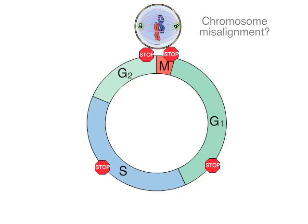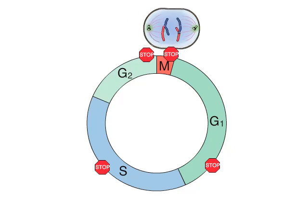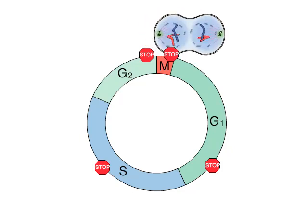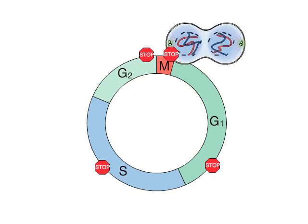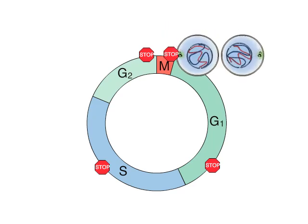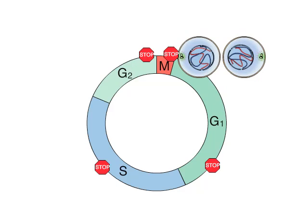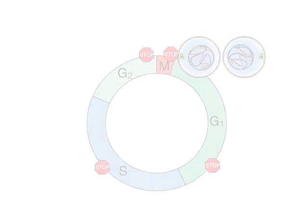and therefore not organized for equal distribution to daughter cells. These cell cycle checkpoints function to ensure that complete genomes are transmitted to daughter cells.